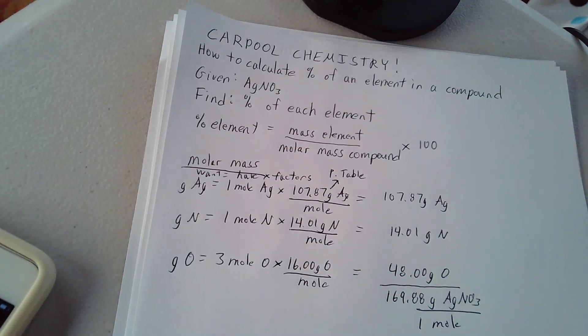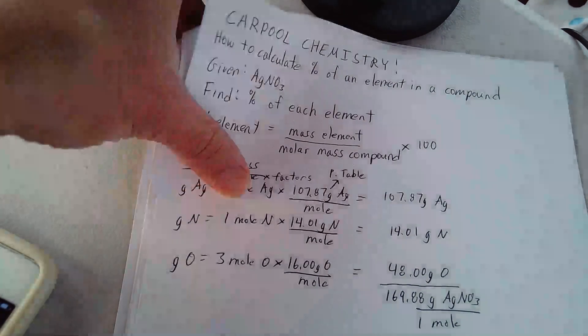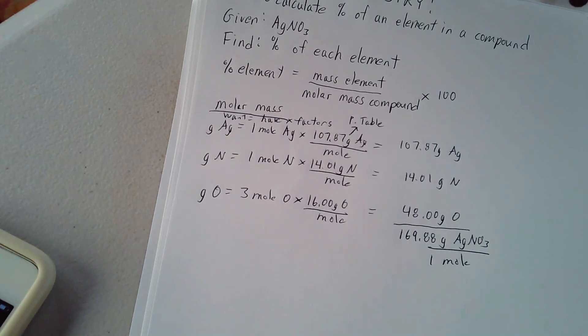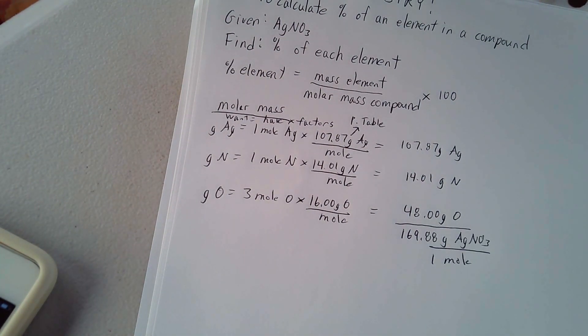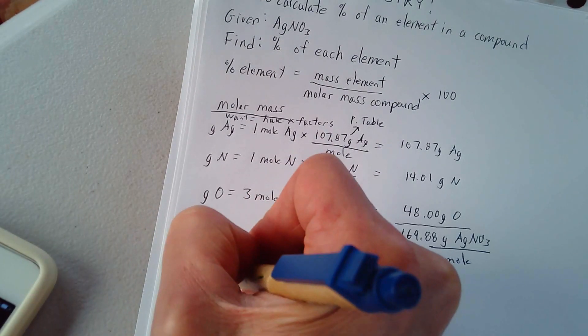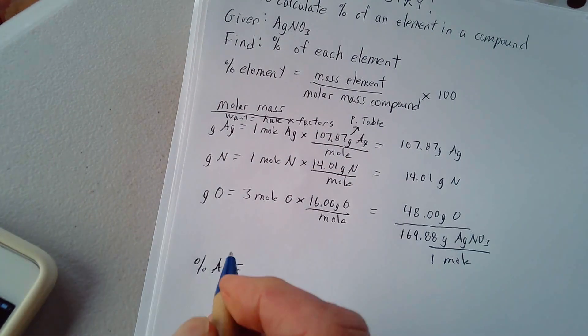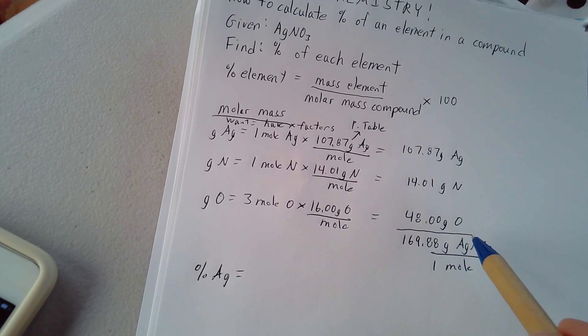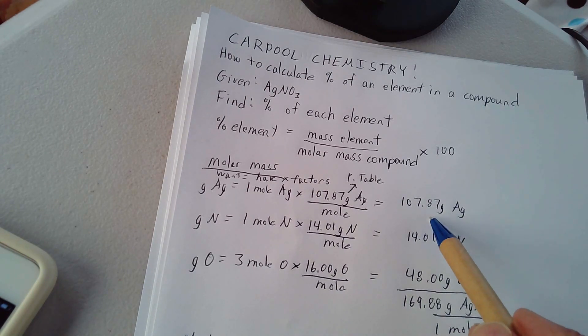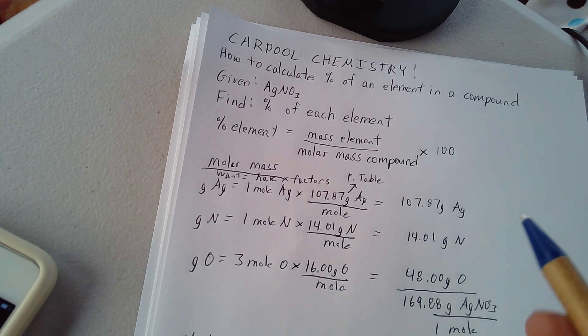The question is, what is the percentage of silver in this? So to find the percentage of silver, you simply say, percent Ag is equal to the mass of the silver. Now of this 169.88 grams of silver nitrate, what portion of that is silver? Isn't it 107.87 grams?